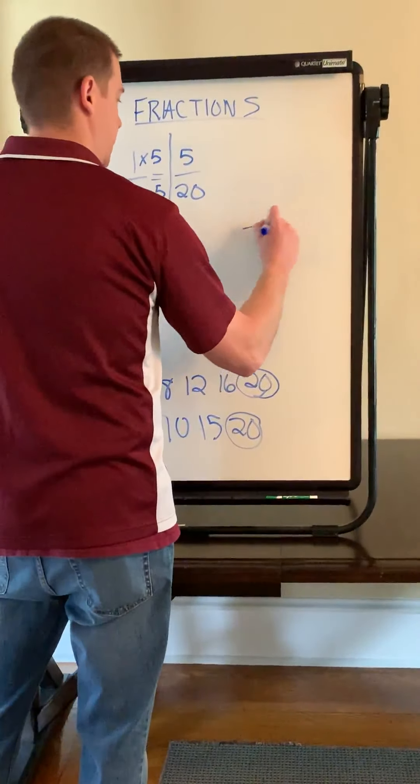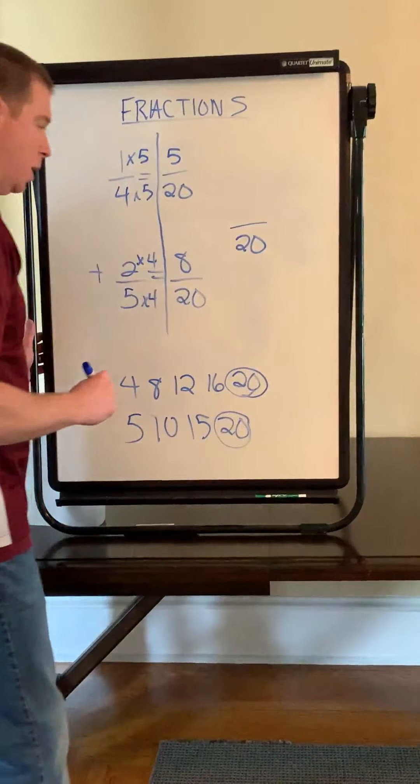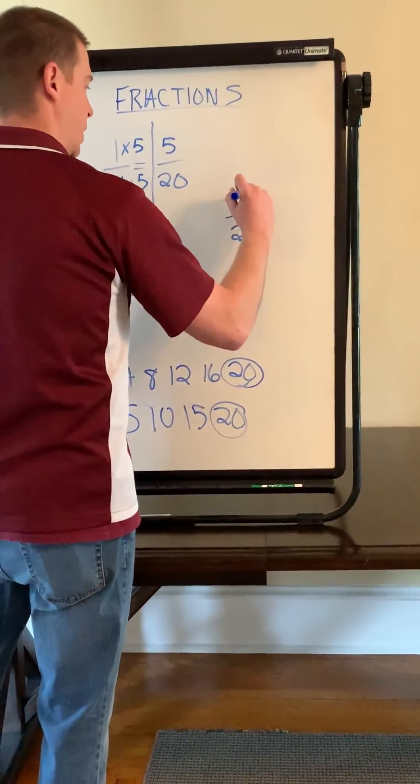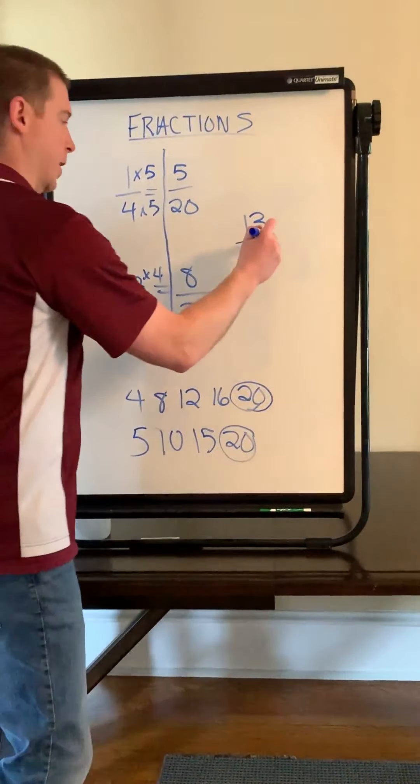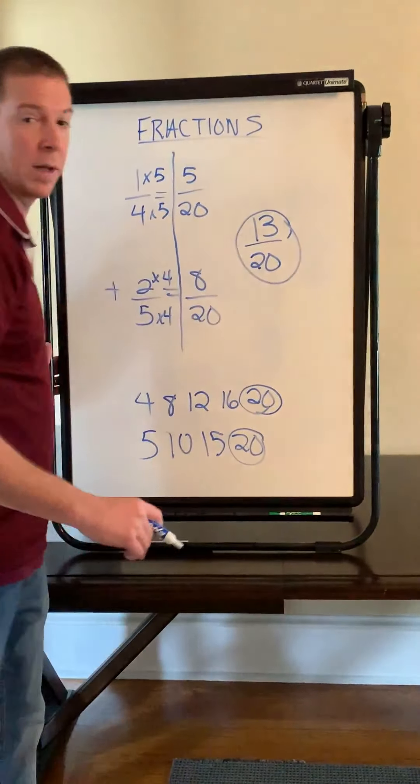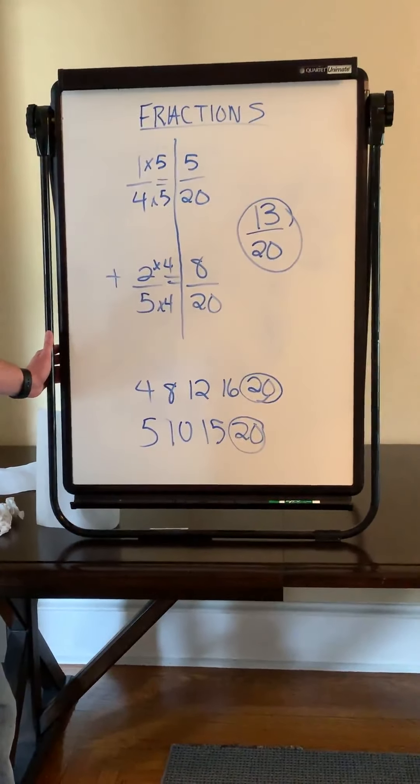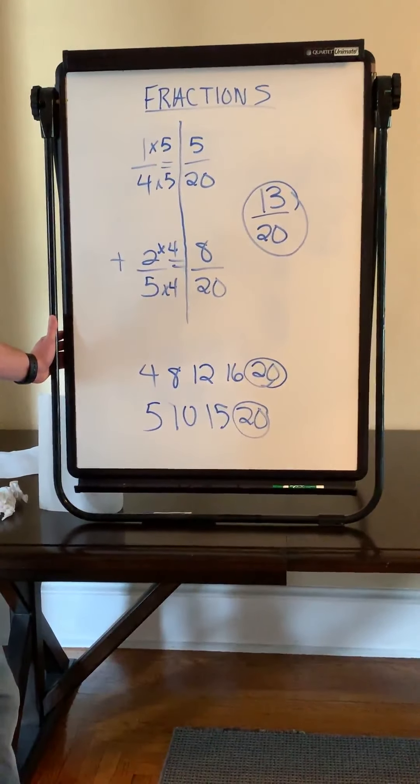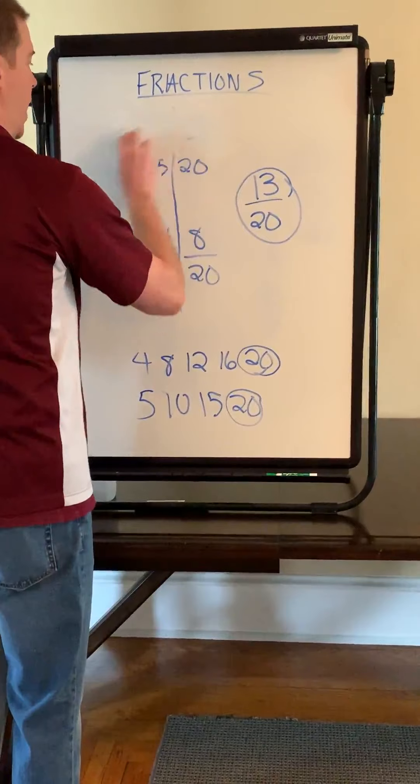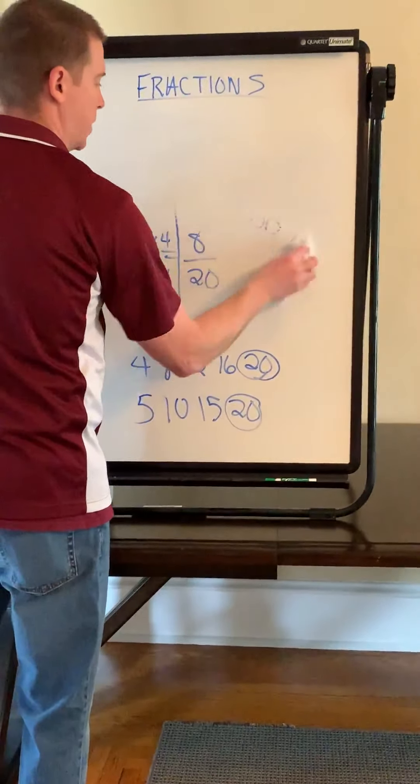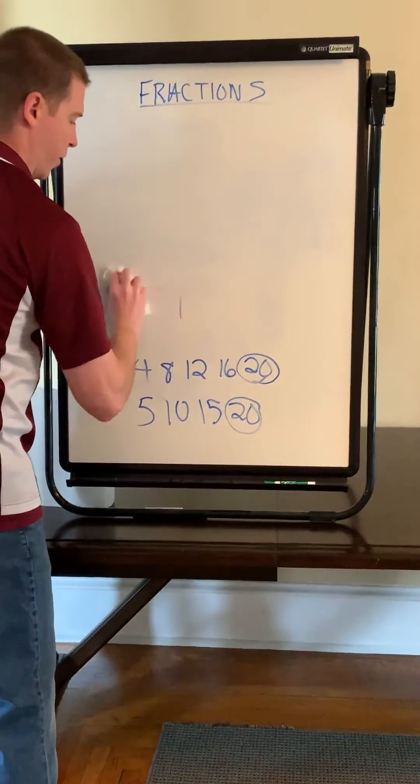So now my new problem is 5/20 plus 8/20. Perfect. Now I just keep the denominator of 20. 5 plus 8 is 13 and I have 13/20 as my answer and it's already simplified. Okay, so far so good.